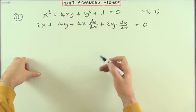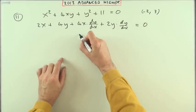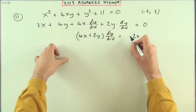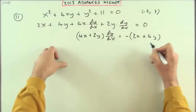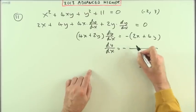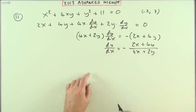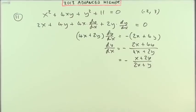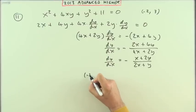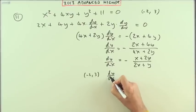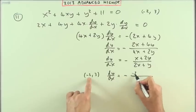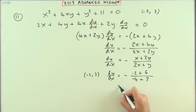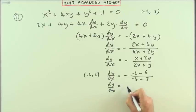Now let's compare it to going through it formally and tidying everything up. Rearranging, I have 4x plus 2y times dy/dx equals negative 2x minus 4y, giving dy/dx = negative(2x + 4y) over (4x + 2y), which cancels down to negative(x + 2y) over (2x + y). Substituting x = -2, y = 3: dy/dx = negative(-2 + 6) over (-4 + 3) = 4 over -1, and the negative of -4 is, as before, dy/dx = 4.